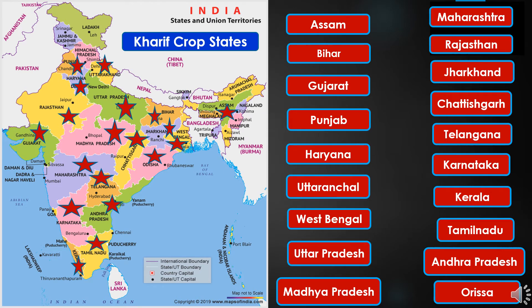Kharif season is the main growing season of our country, where most states cultivate Kharif crops due to abundant rainfall and availability of irrigation water. The states which are major contributors to Kharif crop production include Assam, Bihar, Gujarat, Punjab, Haryana, Uttaranchal, West Bengal, Uttar Pradesh, Madhya Pradesh, Maharashtra, Rajasthan, Jharkhand, Chhattisgarh, Telangana, Karnataka, Kerala, Tamil Nadu, Andhra Pradesh and Odisha. The Kharif season is thus suitable for most states, as the climatic and weather conditions meet the growing requirements of Kharif crops.